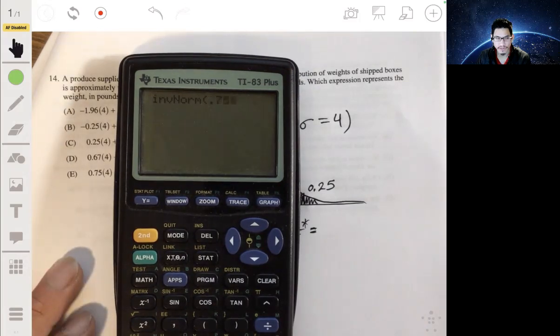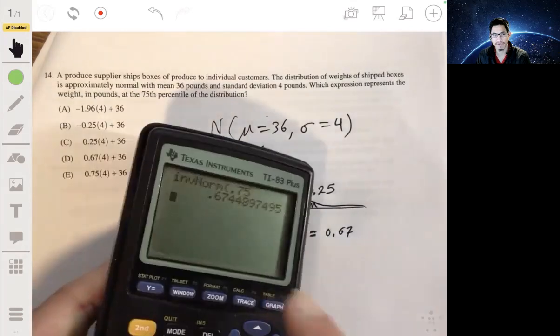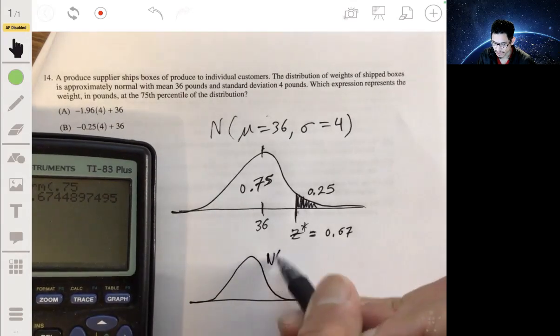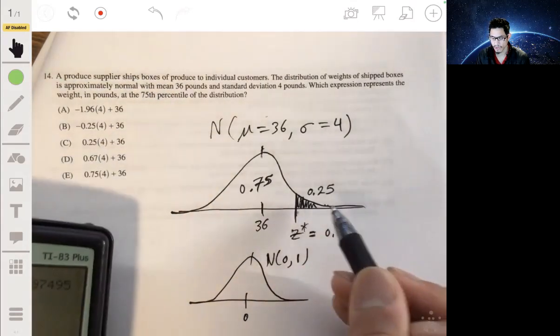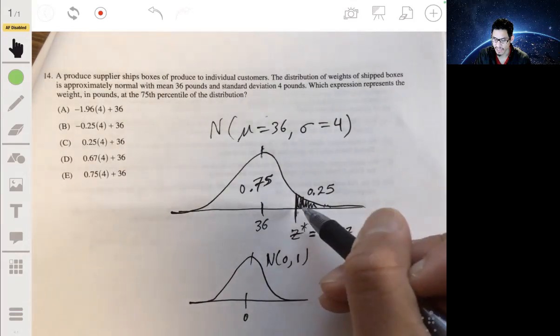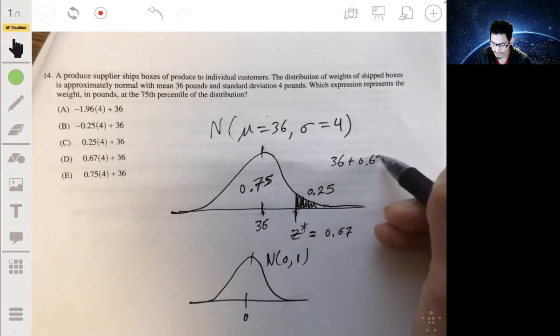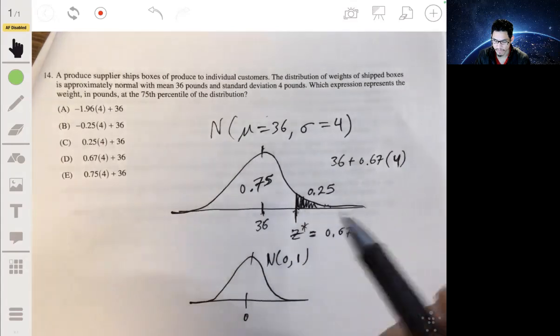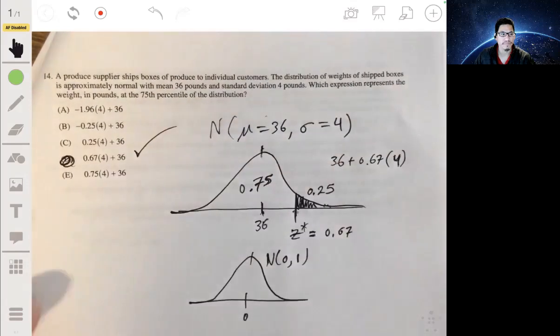And for this, you can actually use your calculator to use the function to go distribution, inverse norm. All you have to do is type the area to the left, which is 0.75. And this will give you that the Z star is 0.64. Because this is representing the Z star values in a standardized normal curve. In other words, where the mean is 0 and the standard deviation is 1. So this is 0.67 standard deviations ahead, greater than 36. So to find this, you would just take 36 plus 0.67 times 4. So this 0.67 standard deviations greater. So let's see what we got. So the answer looks like it would be D. Alright.